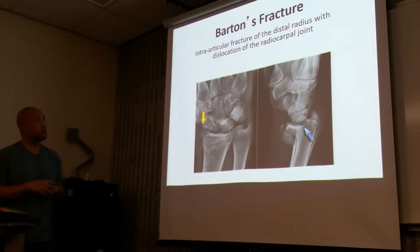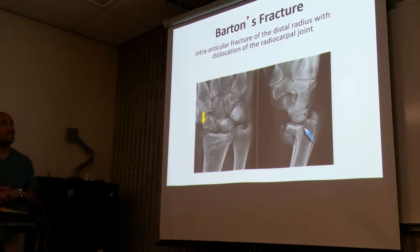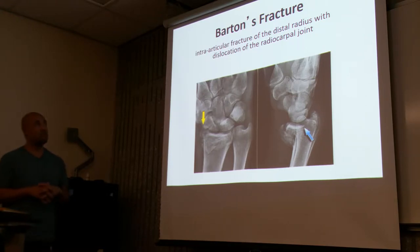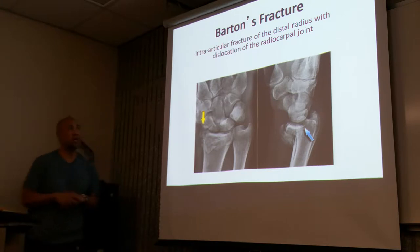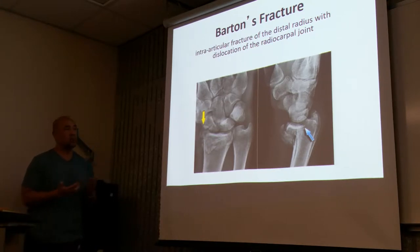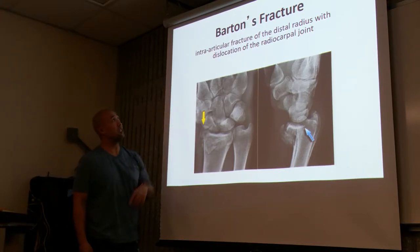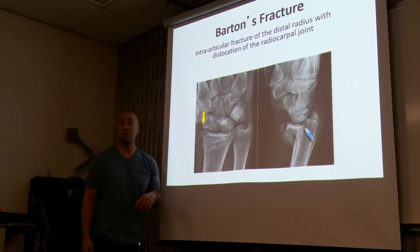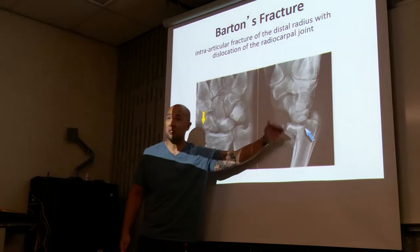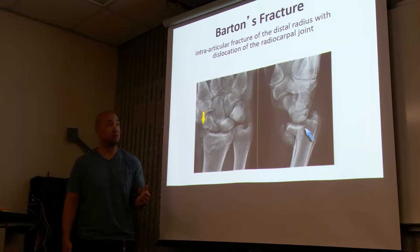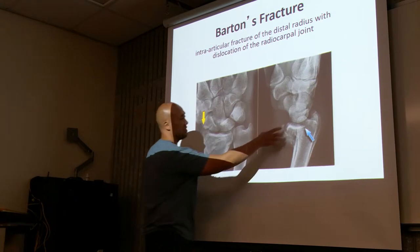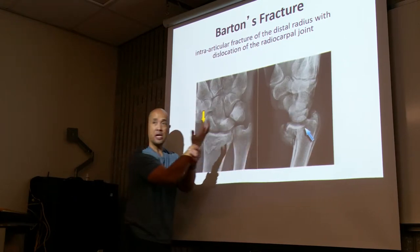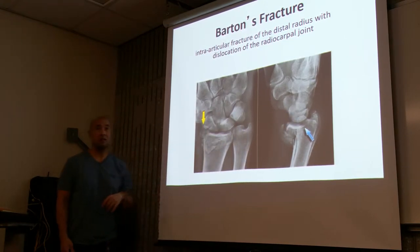Here we have what's known as the Barton's fracture. A Barton's fracture is an intra-articular fracture of the distal radius with dislocation of the radiocarpal joint. It involves the joint itself, so there's a break in the joint space, and there's also a dislocation of the radial and carpal joint.